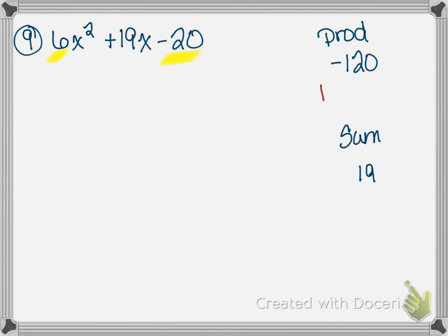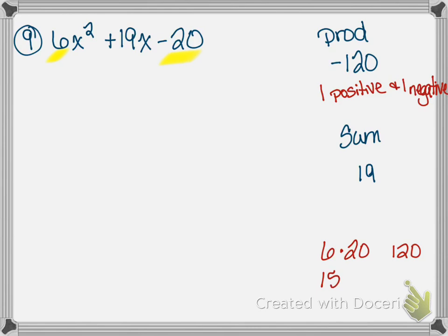Because the product is negative, I'm looking for one positive and one negative number. Let me start writing down some possibilities: 6 times 20 gives 120; 15 times 8 is 120, but the difference isn't 19; 30 times 4 — none of those differences work; 12 and 10 — I don't see any combination getting me back to 19. We keep looking.